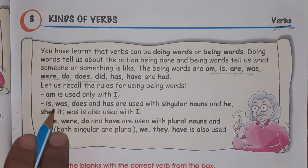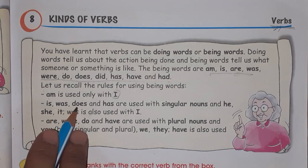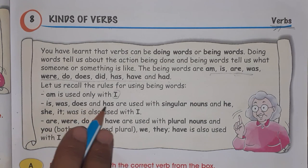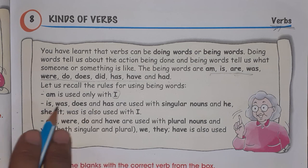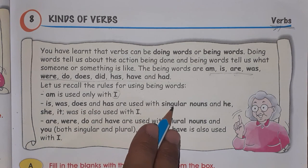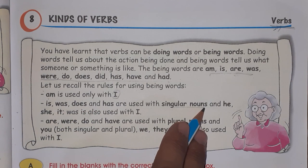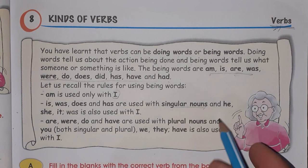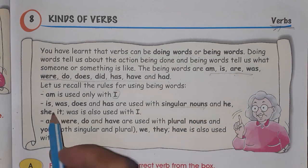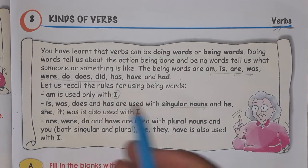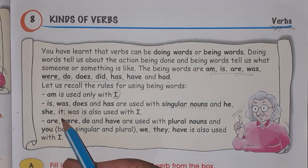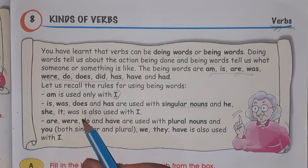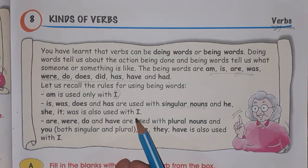'Is', 'was', 'does', and 'has' are used with singular nouns — for example, Ram, Sita, Meera — and also with 'he', 'she', and 'it'. So with any singular person or noun, we use 'is', 'was', 'does', or 'has'.